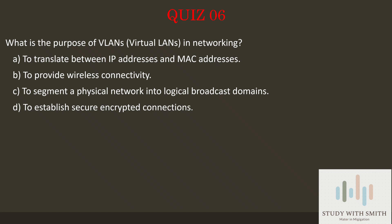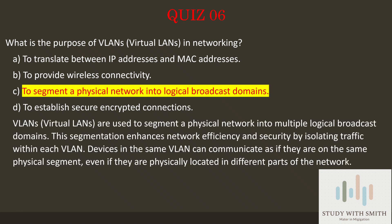The answer is C — to segment a physical network into logical broadcast domains. VLANs, virtual LANs, are used to segment a physical network into multiple logical broadcast domains. This segmentation enhances network efficiency and security by isolating traffic within each VLAN. Devices in the same VLAN can communicate as if they are on the same physical segment, even if they are physically located in different parts of the network.